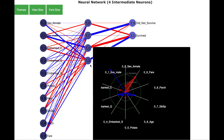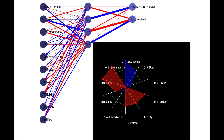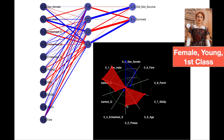Now let us look into neuron 13, which is sending a very strong signal towards the neuron survived. This neuron corresponds to passengers who were female, who paid relatively high fare, who had less age, and who were traveling in a numerically lower class — meaning the first class. So this corresponds to a young female paying high fare traveling first class who survived. This reminds me of Rose from the film Titanic — let's say this is our Rose neuron.